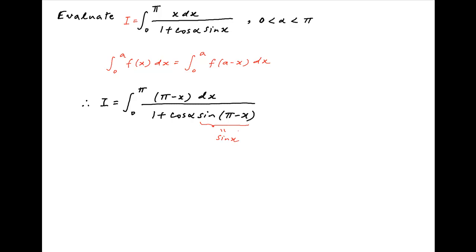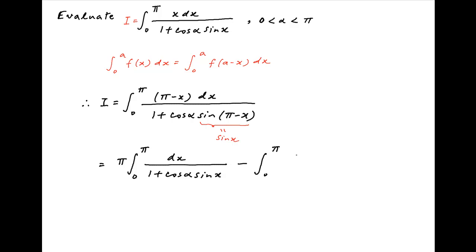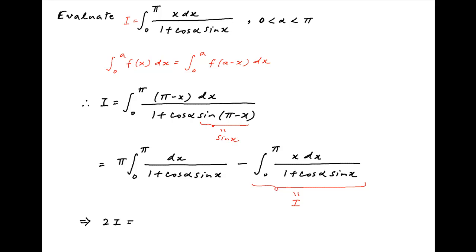Since sin(π−x) equals sin(x), the given integral i can be broken into two components. The first component is π times the integral from 0 to π of dx over (1 + cos α · sin x), minus the second component which is the integral from 0 to π of x dx over (1 + cos α · sin x). Notice that the second integral equals i, and therefore the equation becomes 2i = π times the integral from 0 to π of dx over (1 + cos α · sin x).